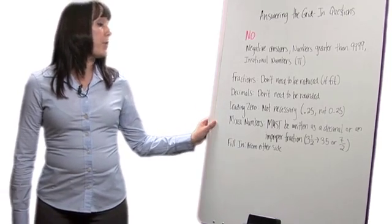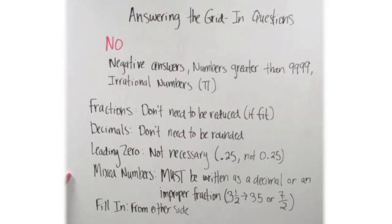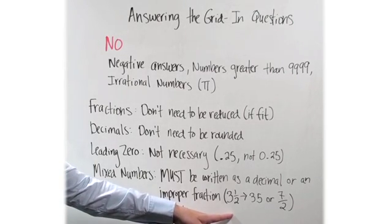Now, this is probably the most important one. Mixed numbers must be written as a decimal or as an improper fraction. So let's say your answer is 3 and a half.